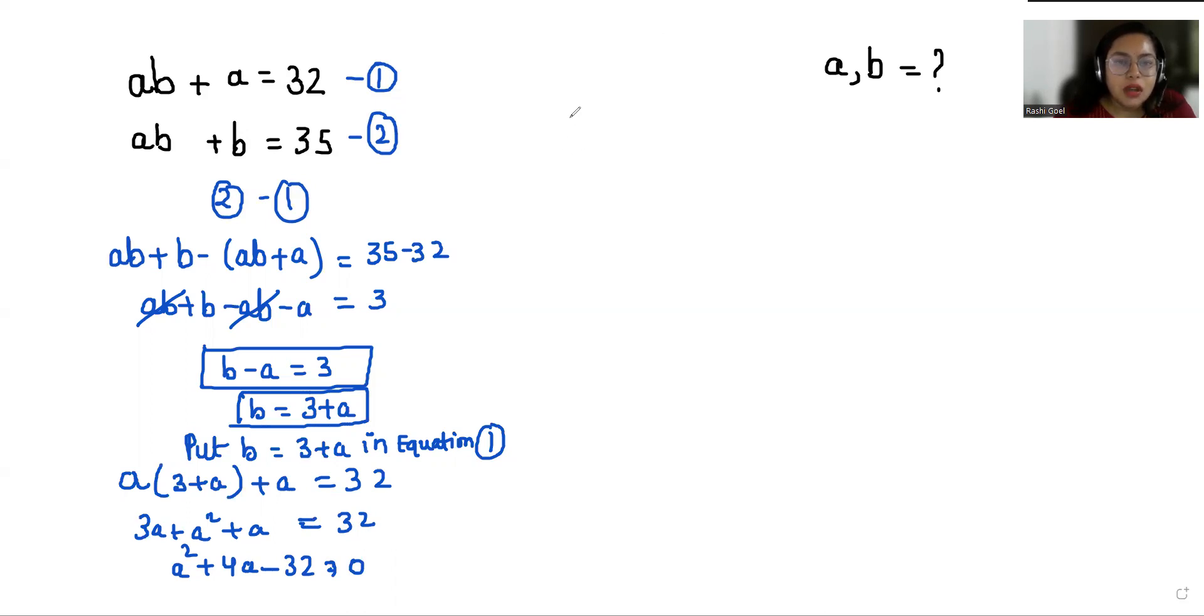So we can do the middle term split method. We can write 4A as 8A minus 4A, so A squared plus 8A minus 4A minus 32 equals 0. From the first two terms I can take A as common, giving A times A plus 8. From the last two terms, negative 4 is common. So we get A minus 4 times A plus 8 equals 0.